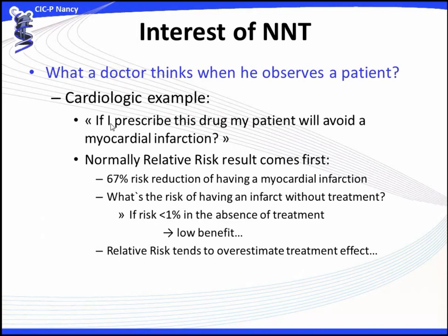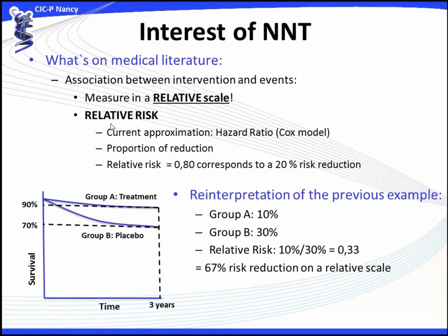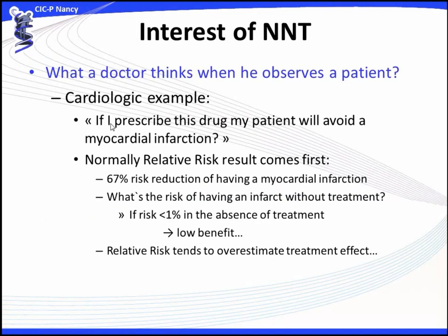Consider what a doctor thinks when observing a patient — we can provide an example from cardiology practice. If I prescribe this drug to my patient, will it avoid a myocardial infarction? Normally authors present the relative risk first, so in this example we would say there is a 67% risk reduction of having a myocardial infarction. But what is the risk of having an infarct without treatment? If the risk is low — for example, 1% or lower in the absence of treatment — the benefit of submitting the patient to treatment is low. So we say that relative risk overestimates the treatment effect.